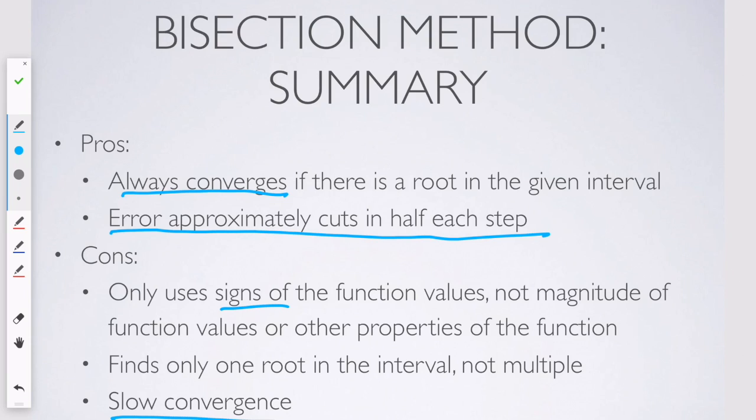Another limitation of this method is if your function has multiple roots, the bisection method only finds one root. It's just a perfectly deterministic procedure. You pick your two endpoints. And once you've picked those endpoints, even if there's three roots in between, bisection will only ever converge to the same one of them.